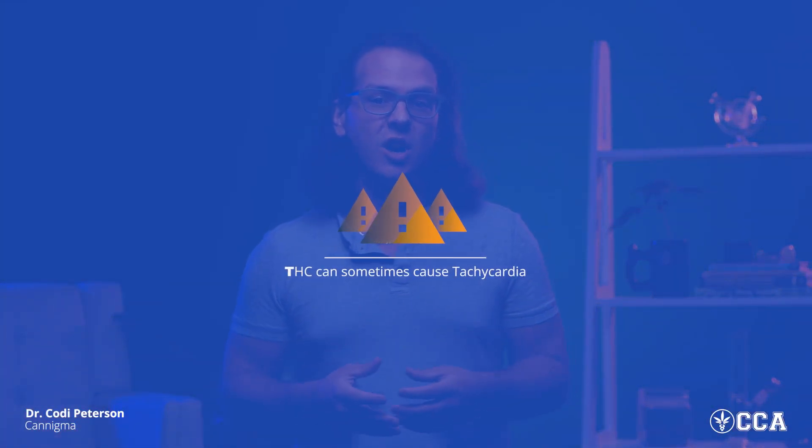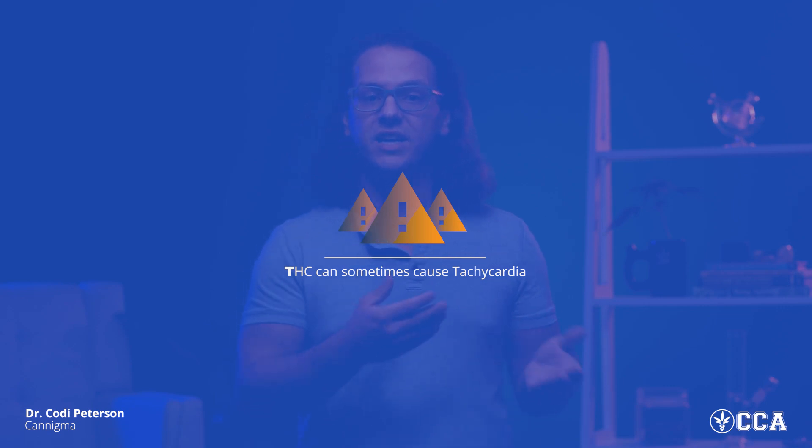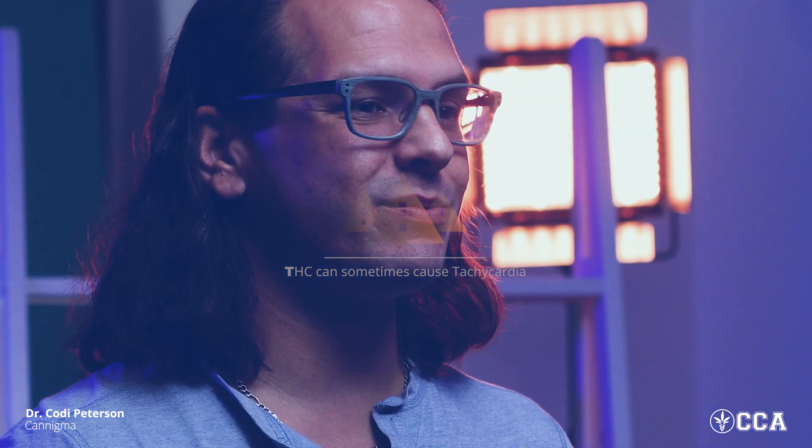This is why THC can sometimes cause a decrease in blood pressure. Additionally, THC is commonly known to cause a side effect of tachycardia, or rapid heart rate. This can also be explained through the endocannabinoid system, as the heart is very abundant in CB1 receptors — activating them causes it to beat faster. The endocannabinoid system serves a very important role throughout the cardiovascular system.